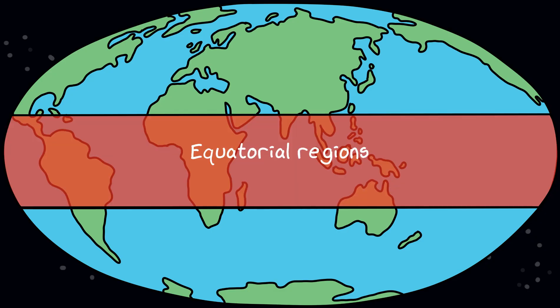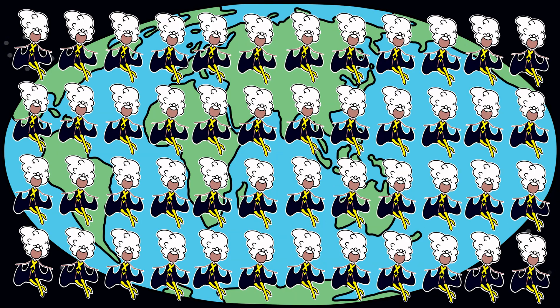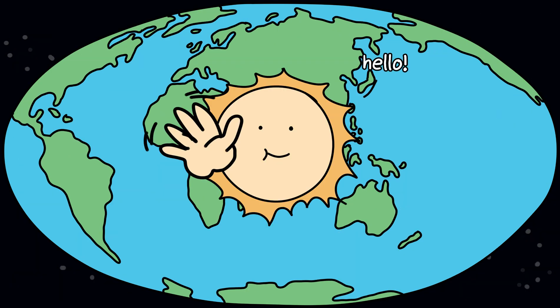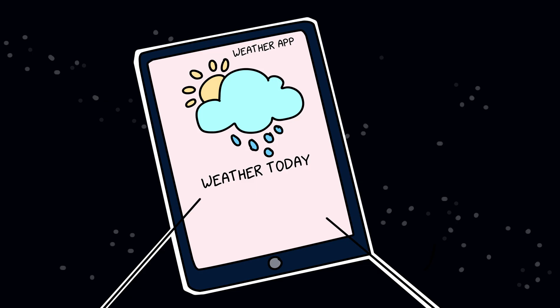Without mixing, equatorial regions overheat, and polar regions freeze more. Storms intensify. Heat waves last longer. There will be no climate stability. Your weather app just says, lol, good luck.